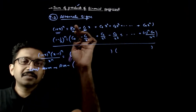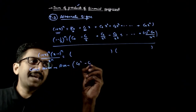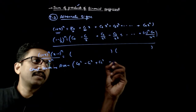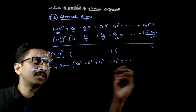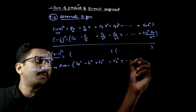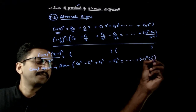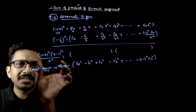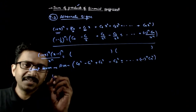So on the RHS, the constant term is c0² minus c1² plus c2² minus c3² plus/minus so on, up to (-1)^n times cn².